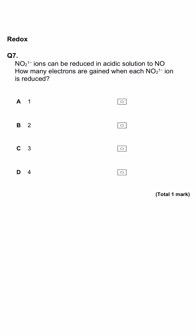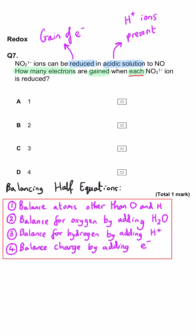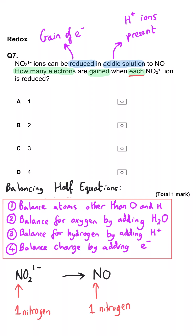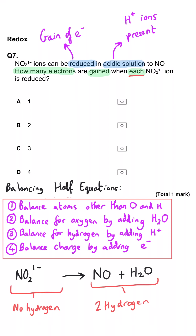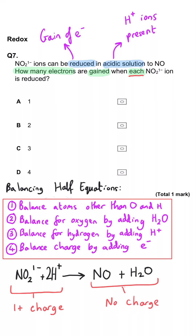NO2 1− ions can be reduced in acidic solution to NO. How many electrons are gained when each NO2 1− ion is reduced? We write the half equation: NO2 1− turns into NO. Nitrogen is already balanced; we add one water molecule to the right for oxygen, then two hydrogen ions to the left. The charge on the left is currently plus 1 and on the right is zero, so we add one electron — answer A is correct.